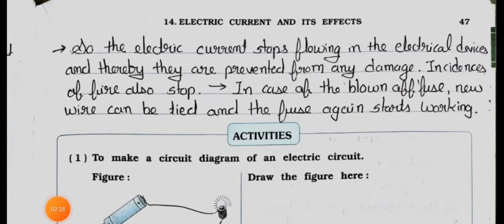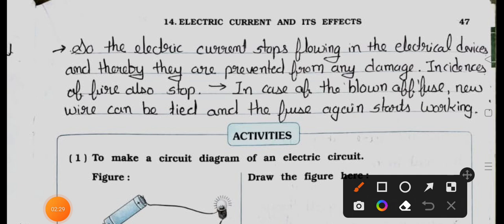Now see the next page. So the electric current stops flowing in the electrical device and thereby they are prevented from any damage. Incidence of fire also stops. In case of blown off fuse, new wire can be tied and the fuse again starts working.